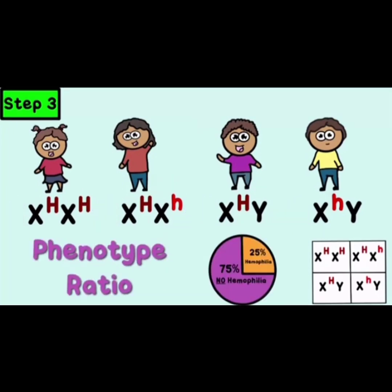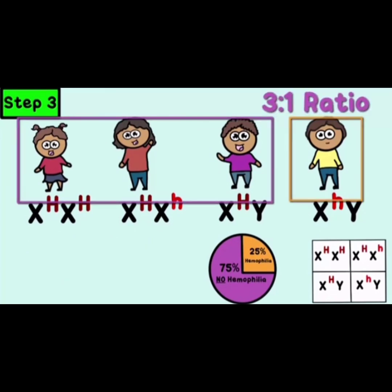The phenotypic ratio is 75% no hemophilia and 25% hemophilia. We can also write this as a 3 to 1 ratio.